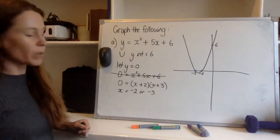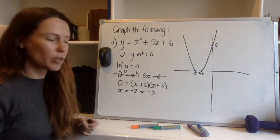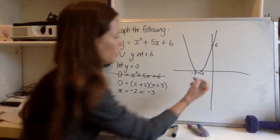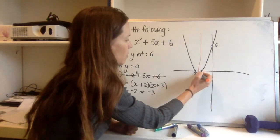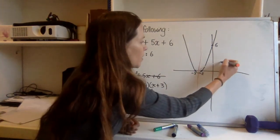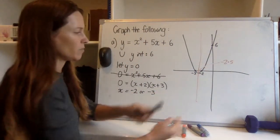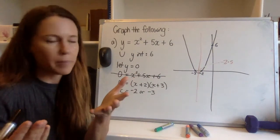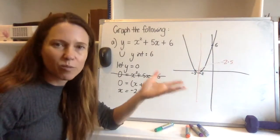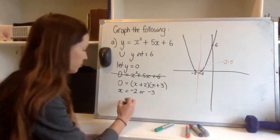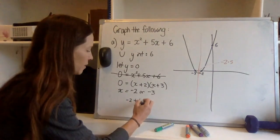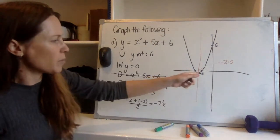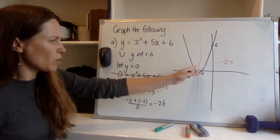There are two more things to find: the axis of symmetry and the vertex. If we're cutting through negative two and negative three, I can halve the difference between those to see that the axis of symmetry must be at negative two and a half. I averaged negative two and negative three — they're only one apart so it must be halfway between them. A lot of the time you'll be able to just look at it and read it off the graph.